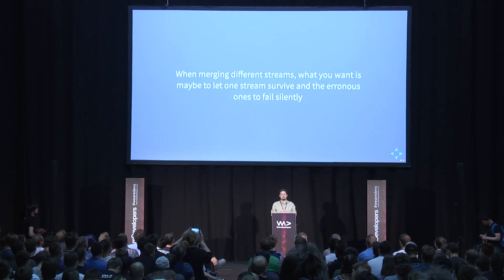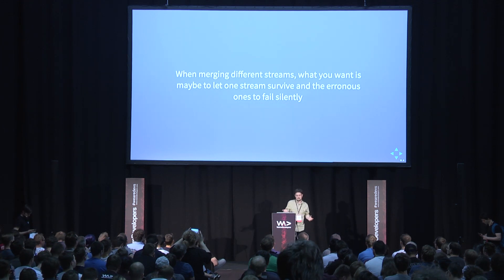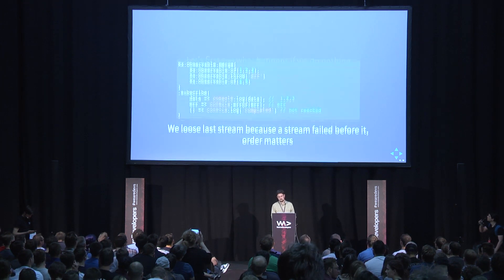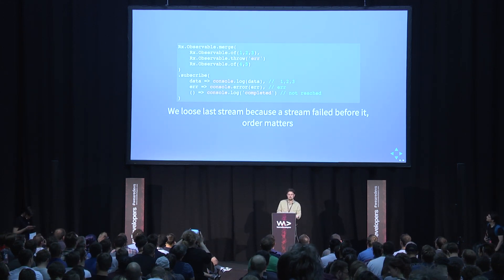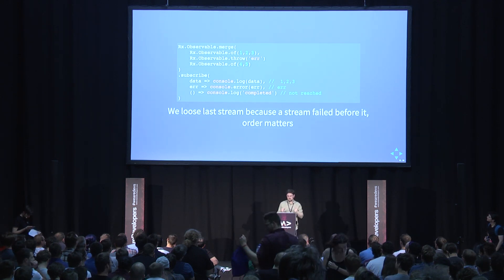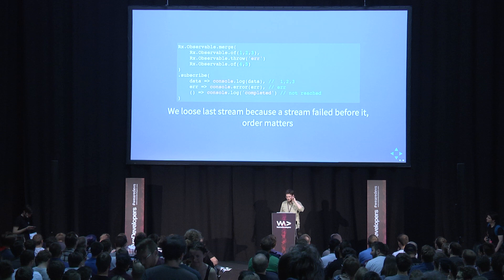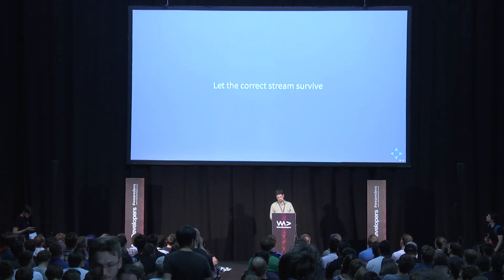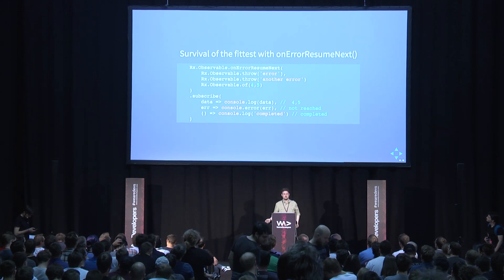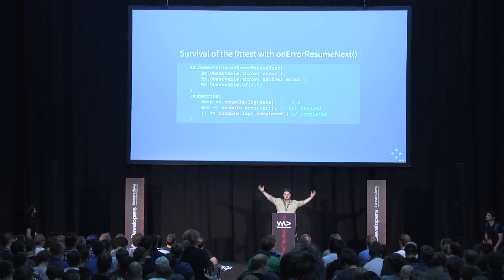You can also choose to ignore errors — useful when you have data from three or four different APIs or streams and only want the strong streams to survive. If you do nothing and merge three data sources where one throws, that bad stream ruins the party for everyone. The fix: replace your merge call with 'onErrorResumeNext' — it treats every error as something to discard and only cares about streams that behave. Remember this method when merging data sources from different places.